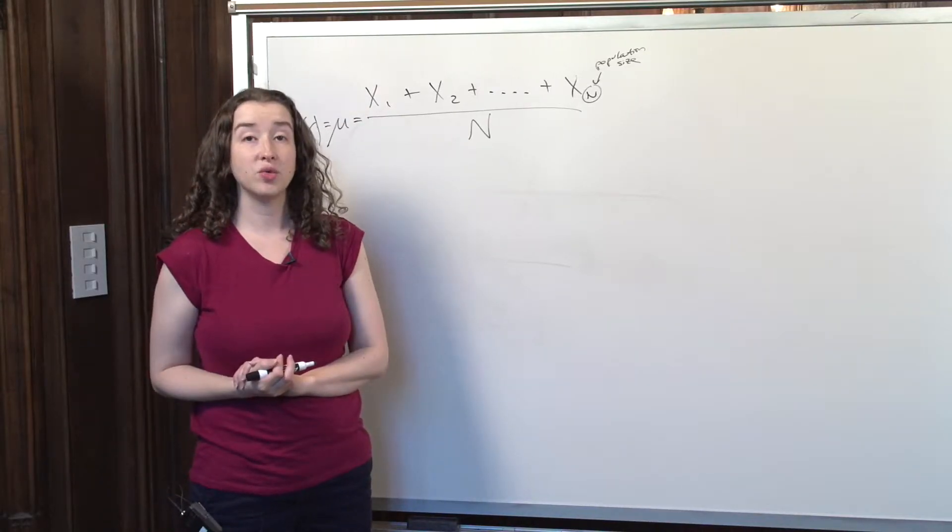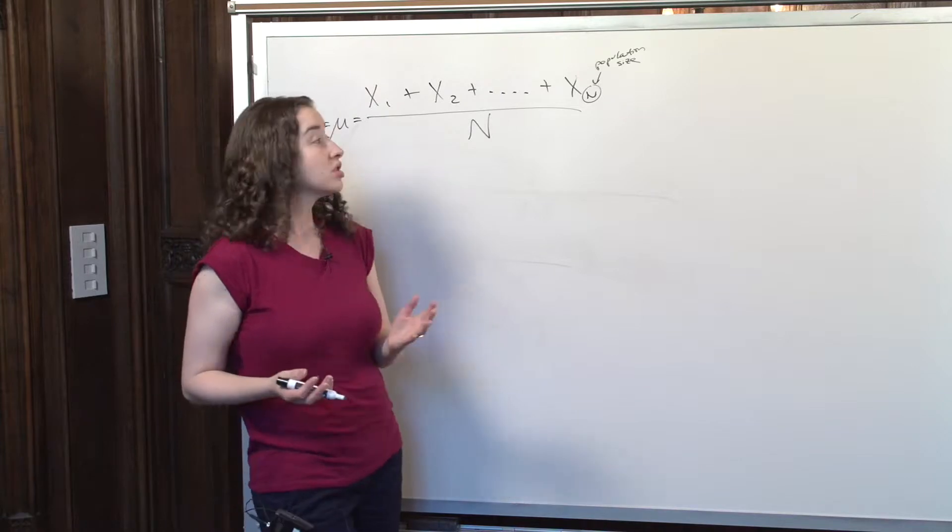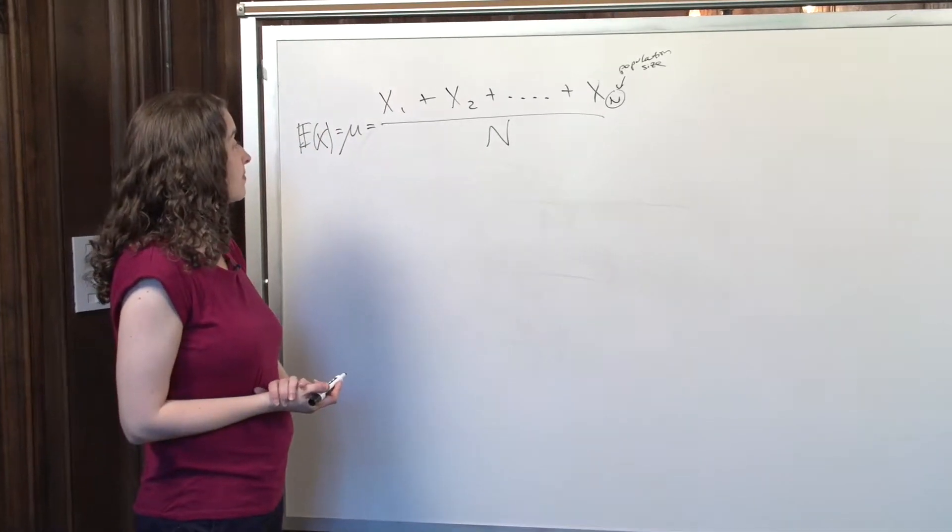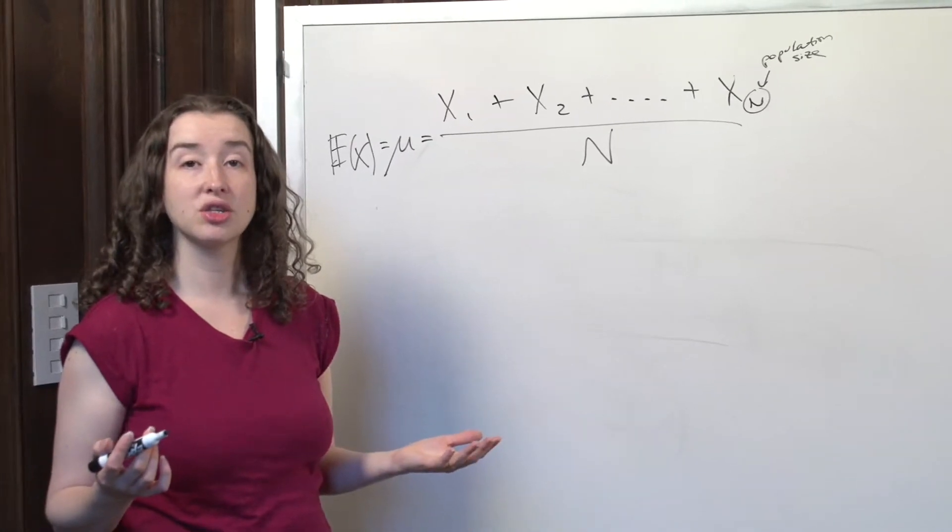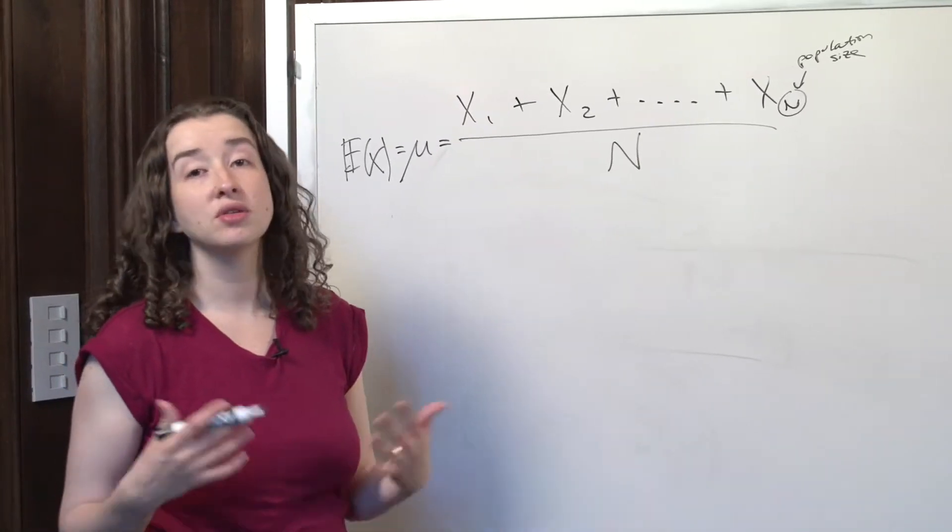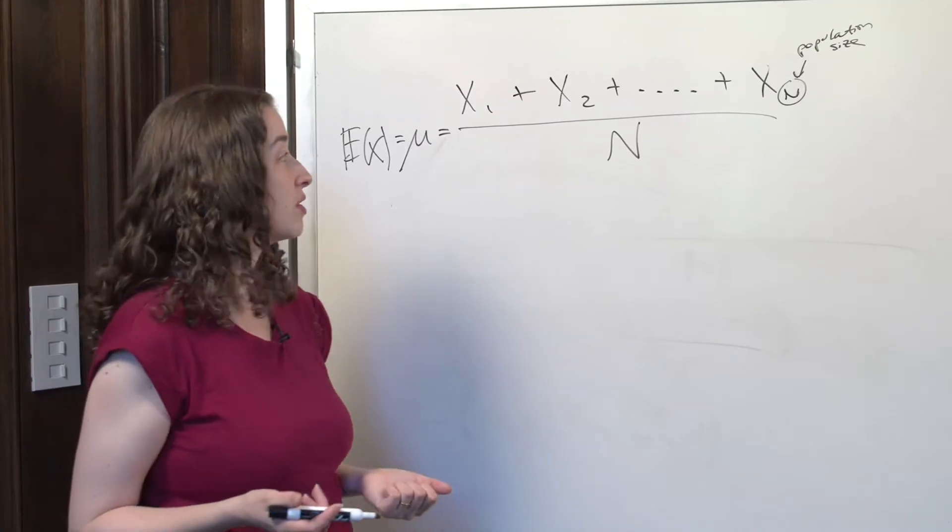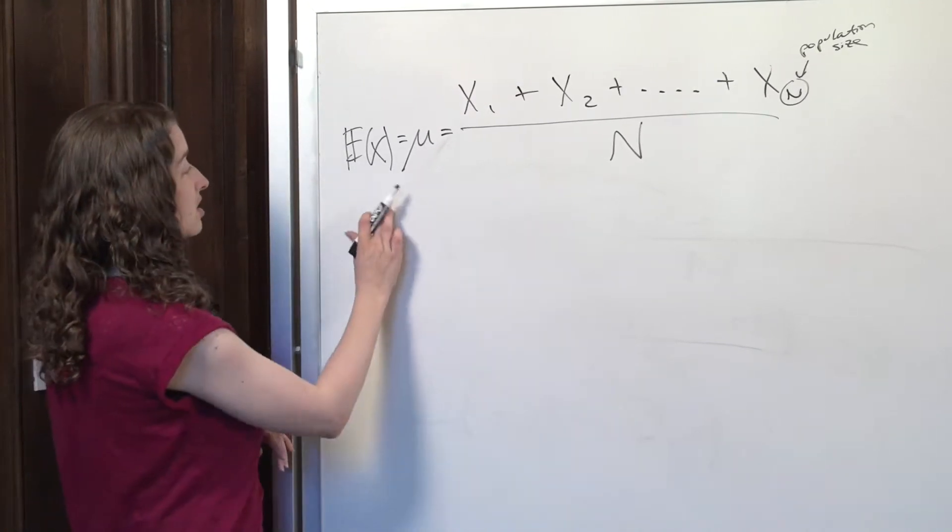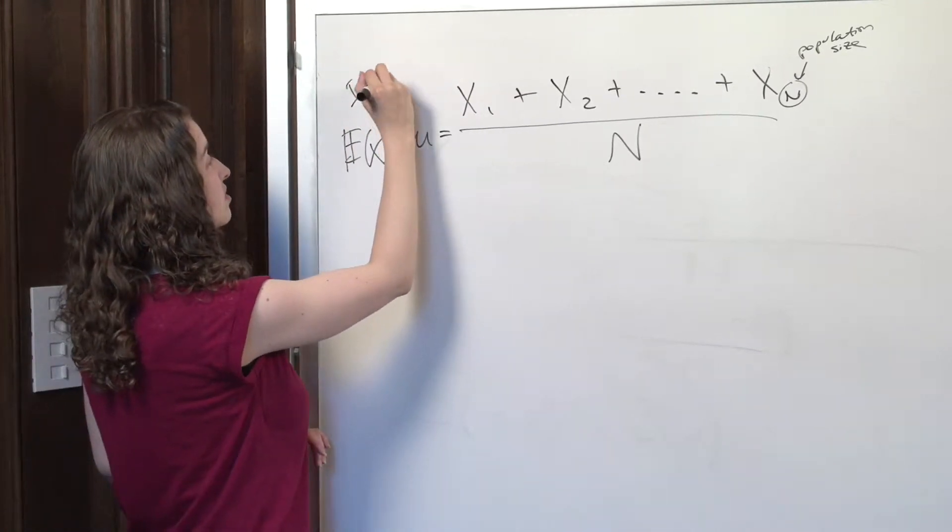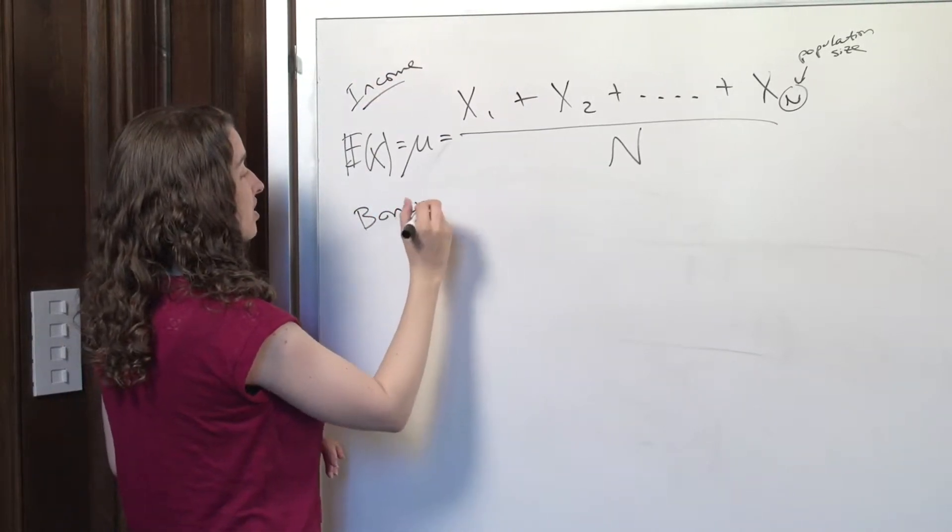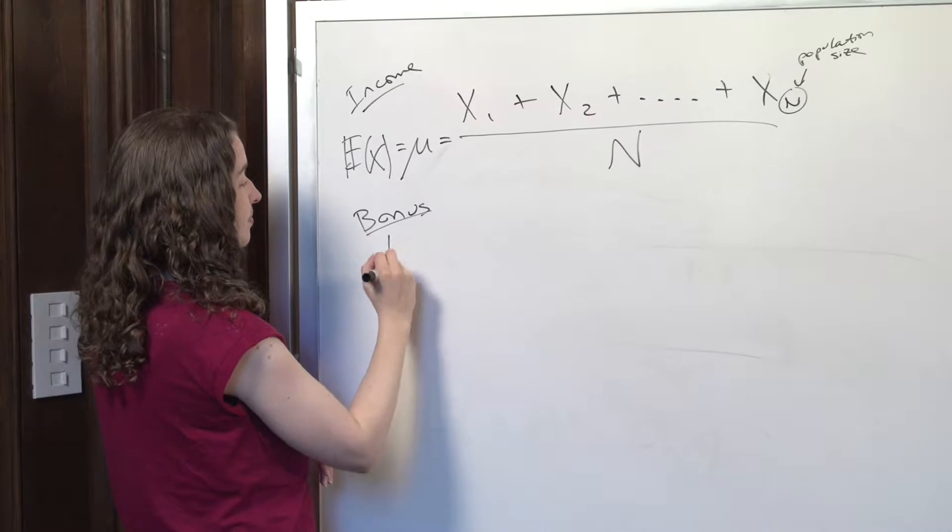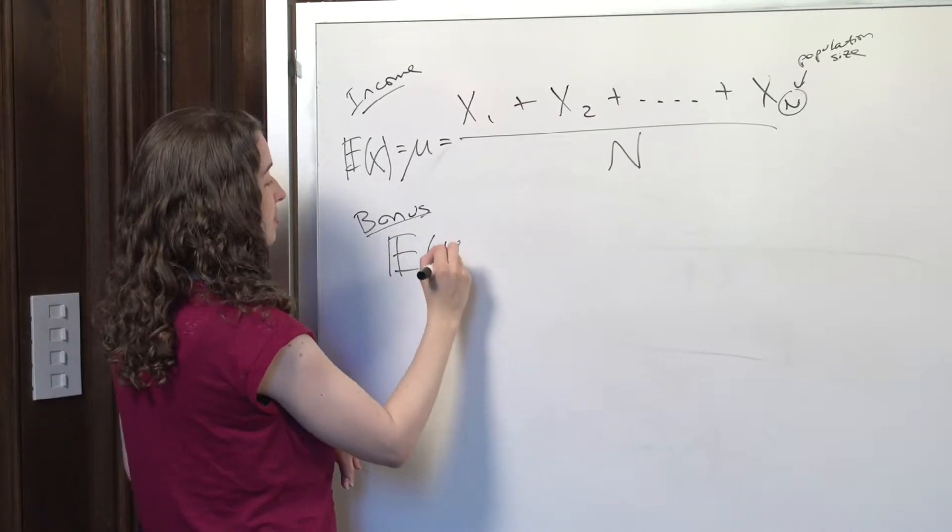What else might we want to do with the expectation operator? Suppose I'm interested in not only the incomes of a bunch of people in this population, but also the bonuses. So suppose these are people who have annual incomes and they also get an annual bonus. So if the incomes are called X, we'll even label this income so we can keep track. Maybe we've also got this extra income, the bonus.